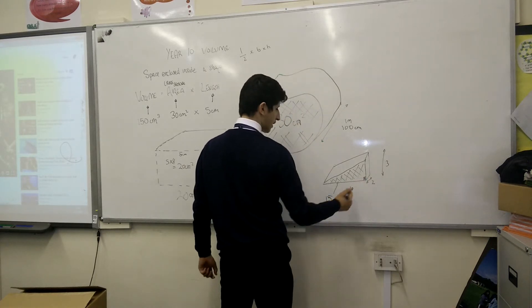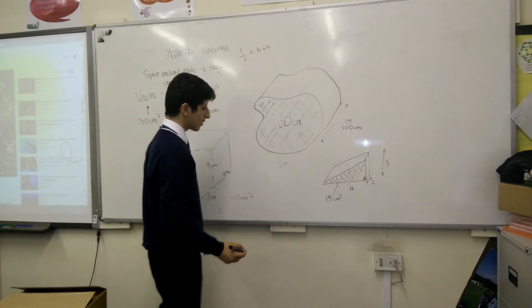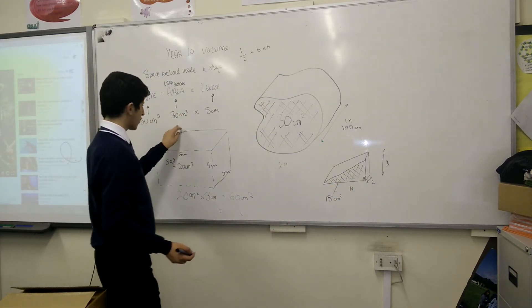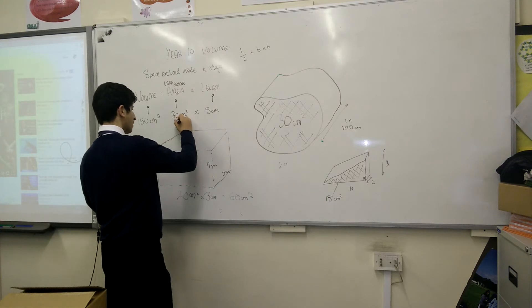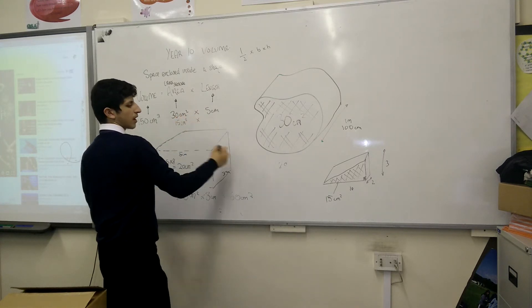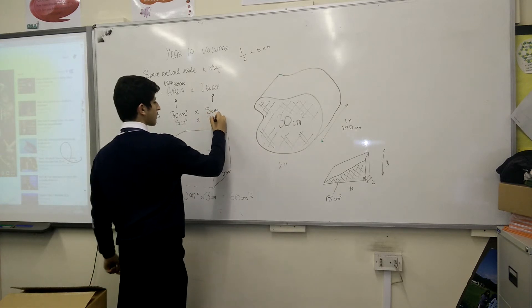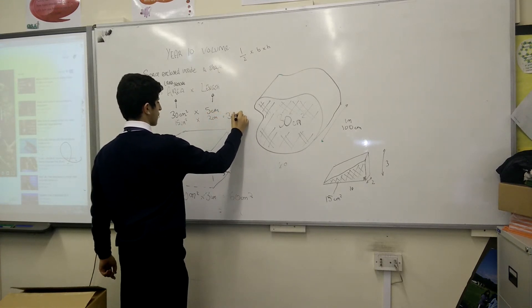Now you already know the length, which is two centimetres. So you apply fifteen centimetres squared here. Fifteen centimetres squared multiplied by the two centimetre length, and that totals thirty centimetres cubed.